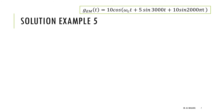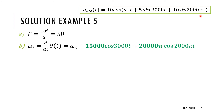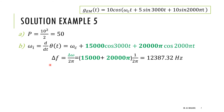Differentiating the angle gives the instantaneous frequency. The derivative of sine is cosine, and the derivative of the angle term gives a factor of 15,000. Ignoring the carrier frequency, we find the maximum of the deviation terms. At t = 0, cosine terms all peak simultaneously, so we sum the deviation amplitudes and divide by 2π to convert to hertz. This gives the maximum frequency deviation delta_f.